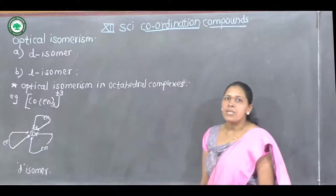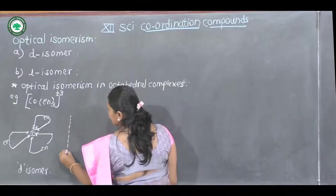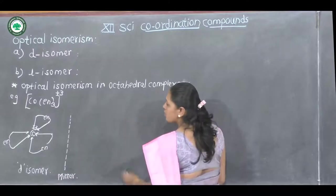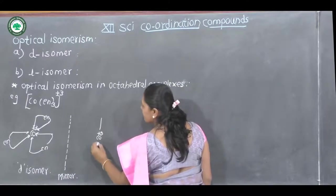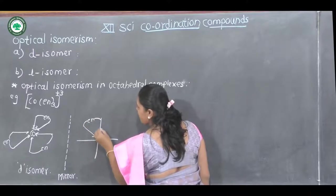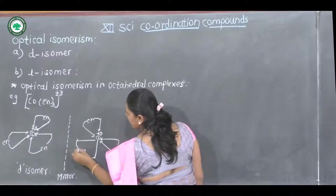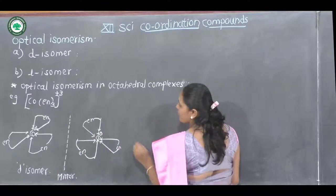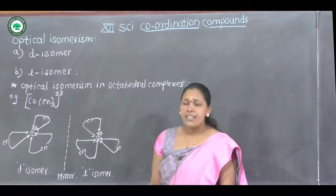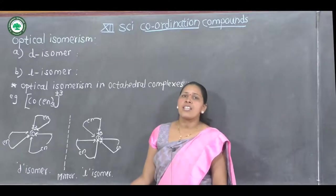This D-isomer has a non-superimposable mirror image. In the mirror image, each ethylenediamine ligand forms two coordinate bonds with cobalt in the opposite arrangement — this is the L-isomer. These two non-superimposable mirror images are called enantiomers, and this is how octahedral complexes show optical isomerism.